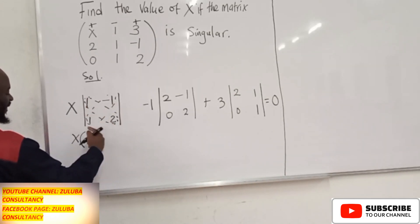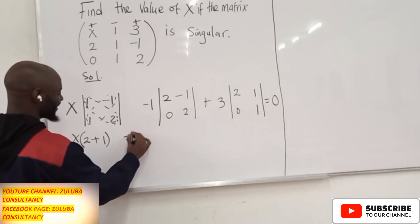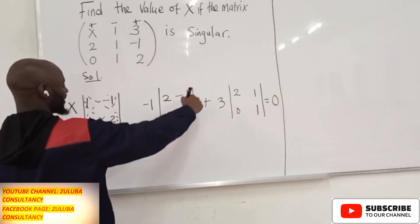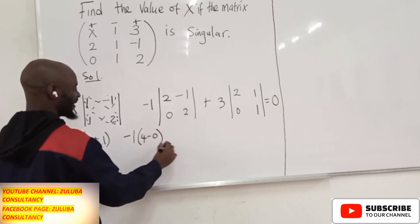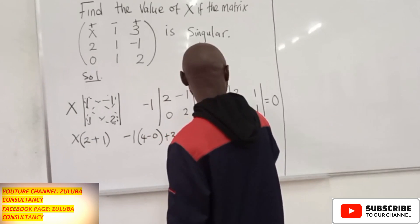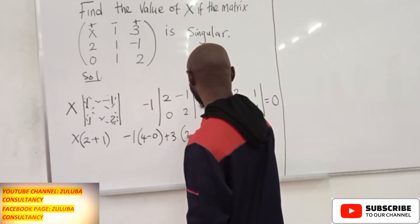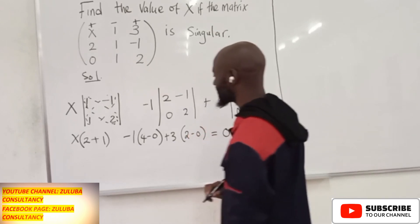So you are going to get 2 plus, because there will be minus 1 and minus, we get plus. This will be minus 1. This will be 4 minus 0. So we get 4 minus 0. We come to this one plus 3. This will be 2 minus 0. This is equal to 0.